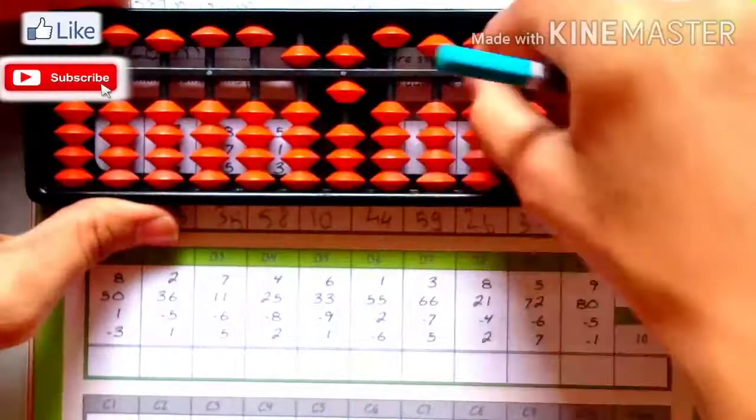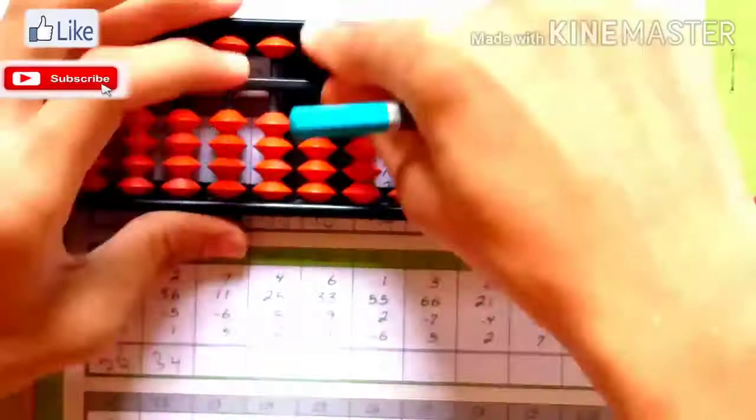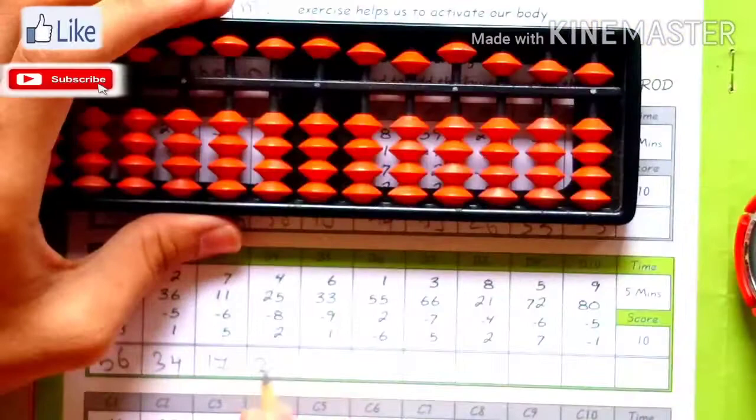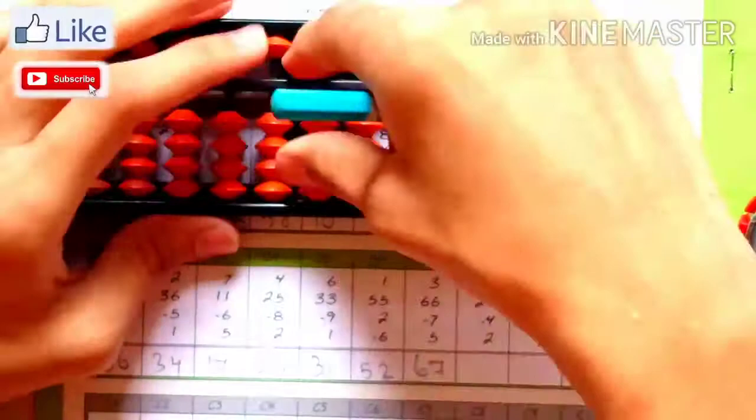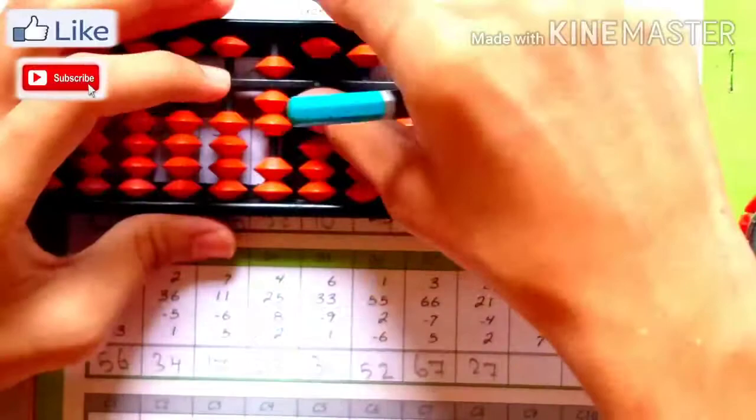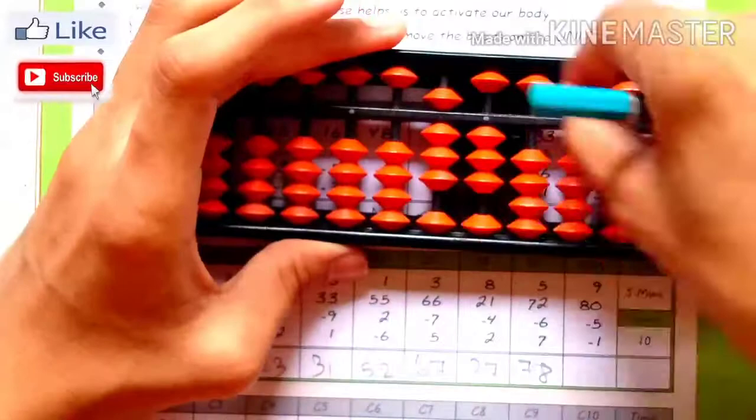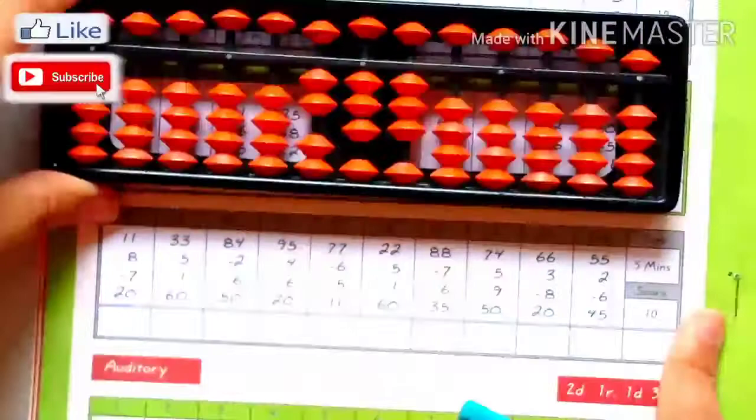8, plus 1, minus 3, 2, plus 3, 6, minus 5, plus 1, 7, 11, minus 6, plus 5, 17, 25, minus 8, plus 2, 6, 33, minus 9, plus 1, 55, plus 2, minus 6, 52, plus 6, minus 7, plus 5, 67, plus 2, minus 4, plus 2, 27, 72, minus 6, plus 7, 78, 80, minus 5, minus 1, 53. So here 54 seconds.